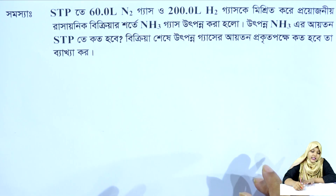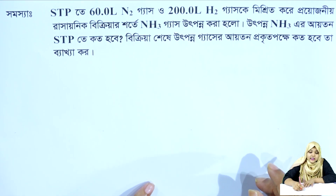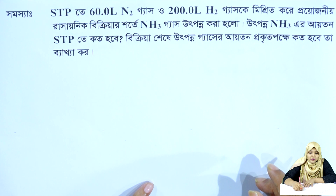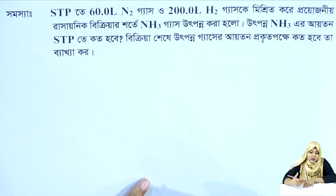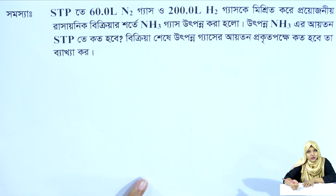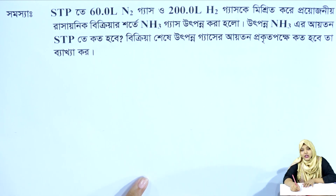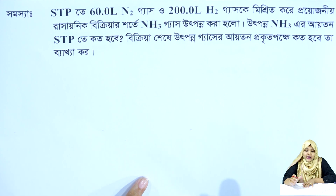Now, at STP, 60 liters of nitrogen gas and 200 liters of hydrogen gas are mixed together to produce ammonia gas. We need to find the volume of ammonia produced at STP.